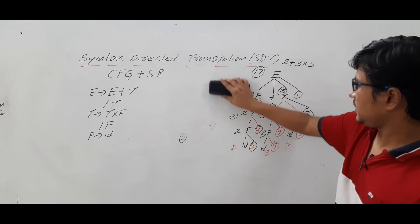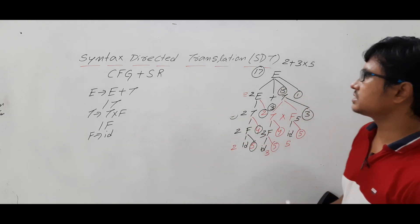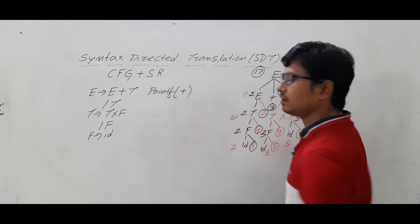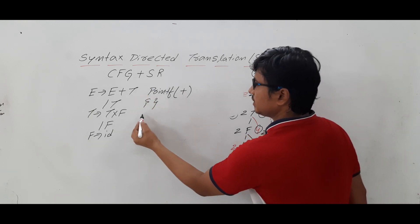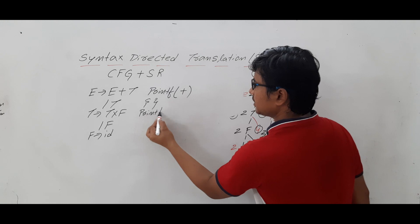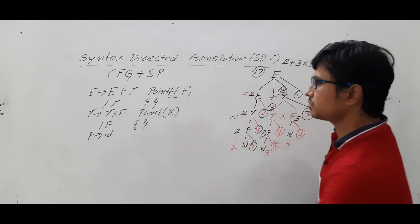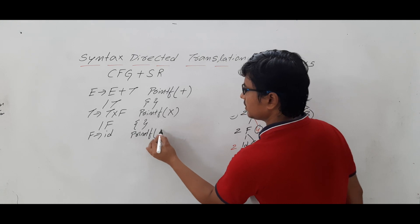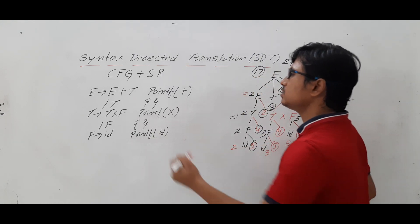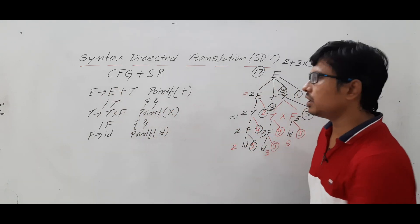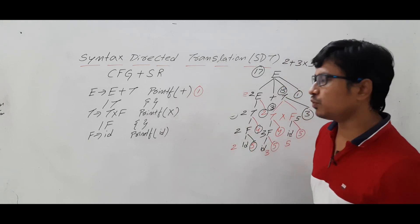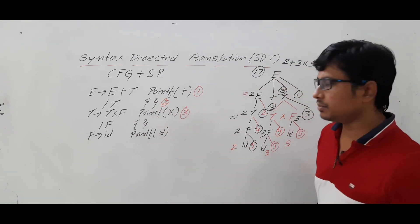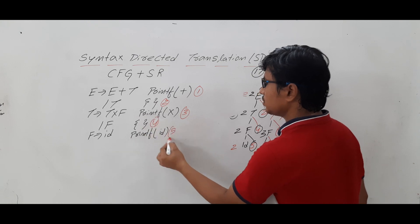Let me discuss another example for better understanding. Now I am giving different semantic rules: for E determines E plus T — print of plus; for E determines T — do nothing; for T determines T star F — print of multiplication; for T determines F — do nothing; and for F determines ID — print of ID value. These are the new semantic rules.